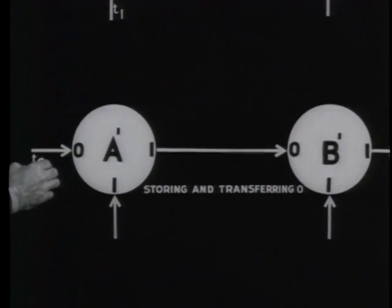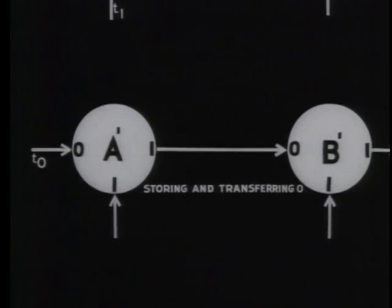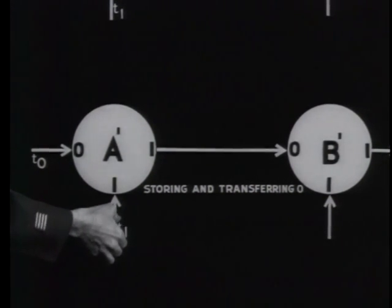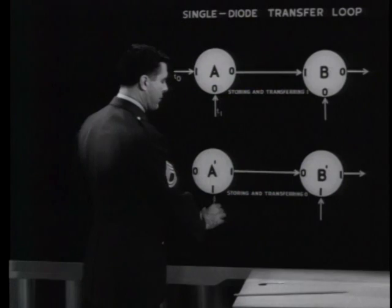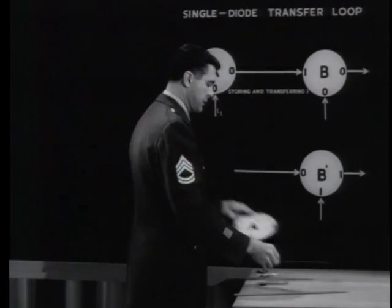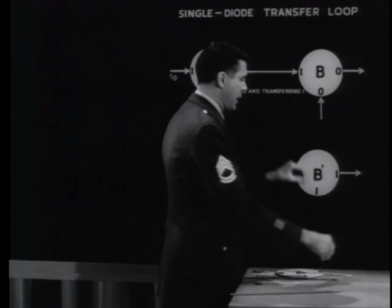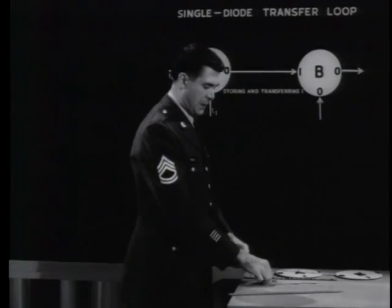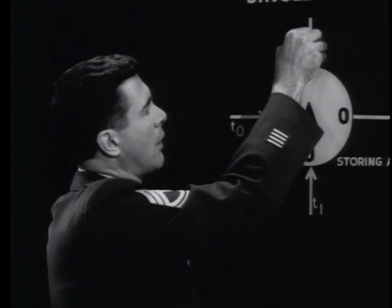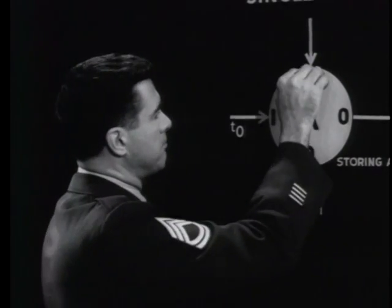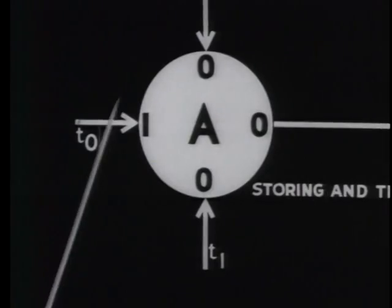The input pulse at time T0 placed the bit in storage, and it was held there until the shift pulse at time T1 transferred it. The single diode loops have many applications in automatic data processing systems, but there is a limit to the amount of control they provide. Suppose, for example, there were several inputs coming into the first core of a loop. In this way, there are three inputs here.